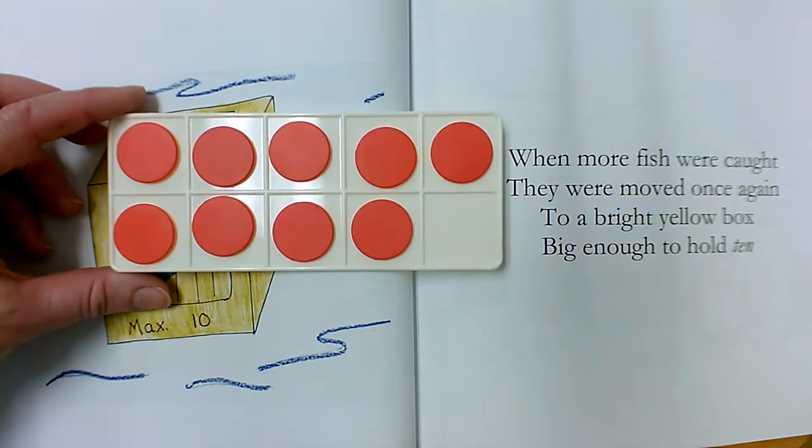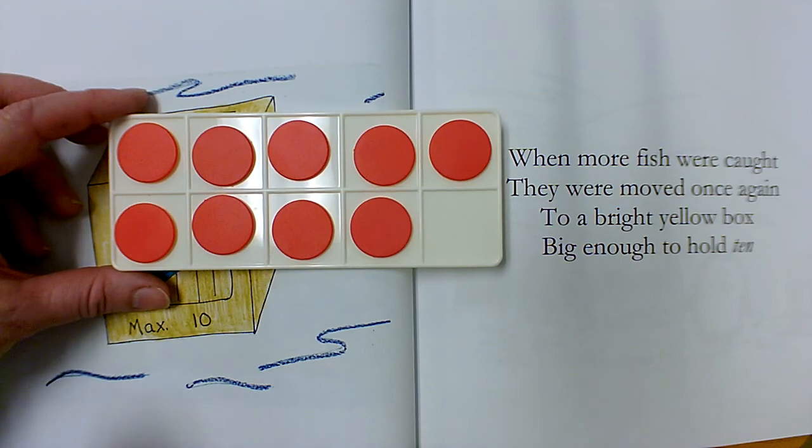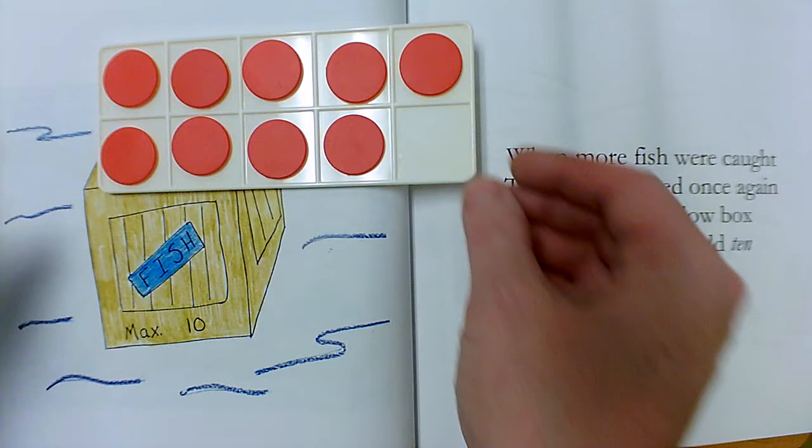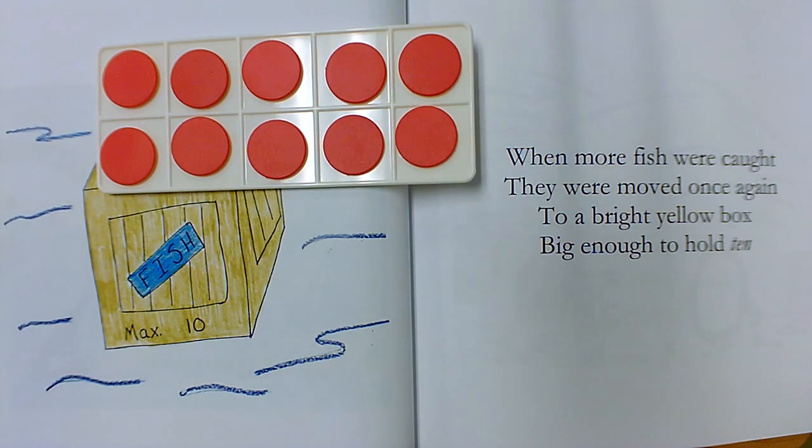Right now, this 10 frame is not full. It holds nine ones, because I can't count it by 10. It's not full. But if I filled it up, I would have a group of 10. I know that it always holds 10. It's a 10 frame. There's five in the top and five in the bottom.